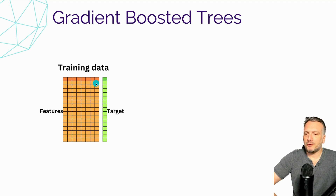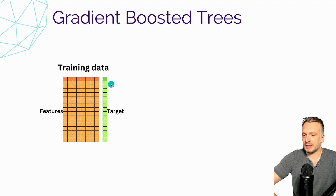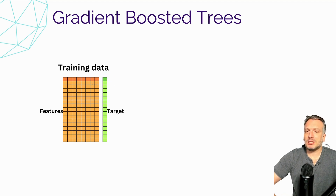The target is what we want to learn. We're going to feed the features into the model and the model is going to try to predict something that is close to the target. Training a model means trying to learn the relationship between the features and the target.